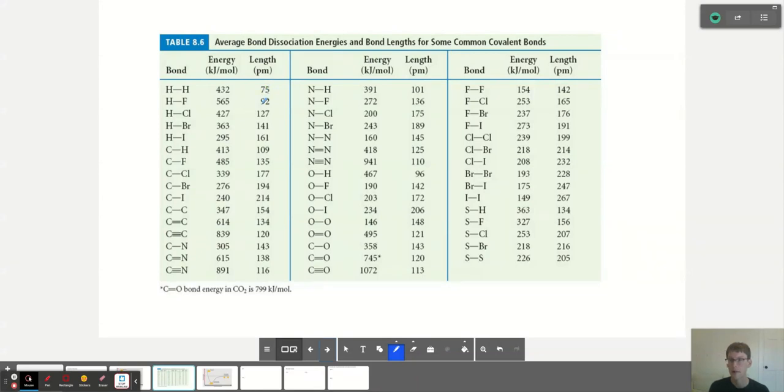But when we get down into two elements that are in the second energy level, like for example carbon to carbon, then the bond length is much greater, 154 picometers. Of course, if it's carbon bonded to say fluorine, fluorine is a bit smaller than carbon because it has more protons. That's why we're down to 135.